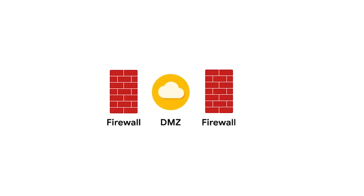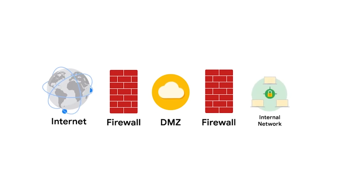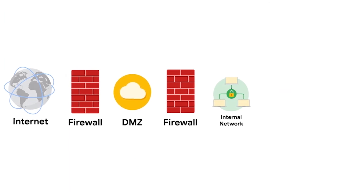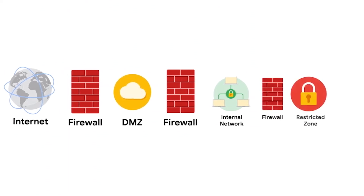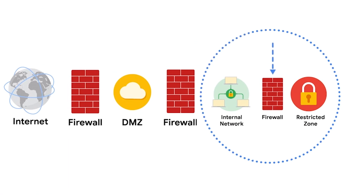Ideally, the DMZ is situated between two firewalls. One of them filters traffic outside the DMZ, and one of them filters traffic entering the internal network. This protects the internal network with several lines of defense. If there's a restricted zone, that too would be protected with another firewall. This way, attacks that penetrate into the DMZ network cannot spread to the internal network, and attacks that penetrate the internal network cannot access the restricted zone.